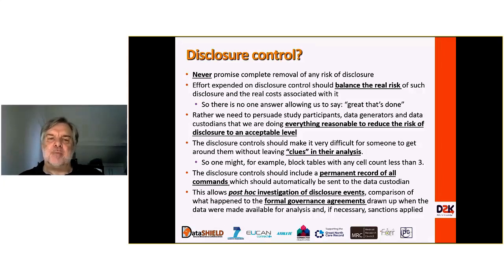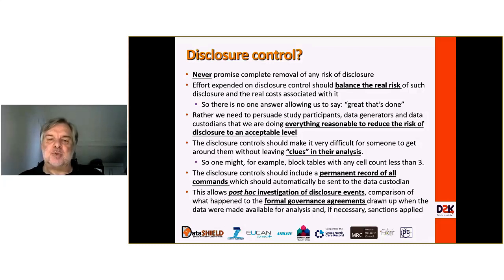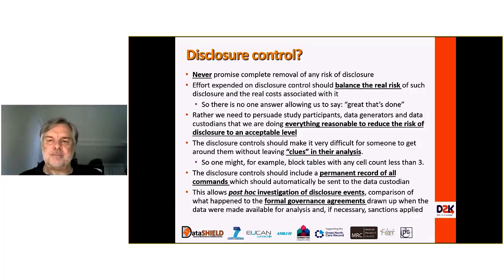These records can then be compared to what was actually listed in the formal governance agreements. And if someone has done something that led to a disclosure that breaks the agreements that they had, then in that case it's possible to go in, identify this and then to apply sanctions to that person or that group, which may basically involve preventing them being able to use DataShield again for a period of time.